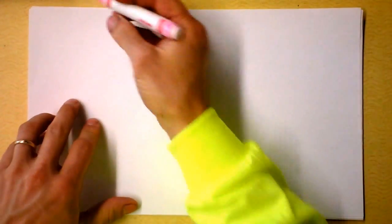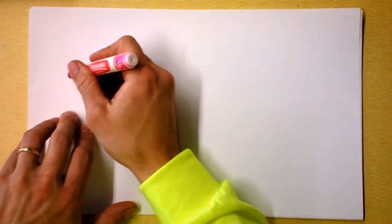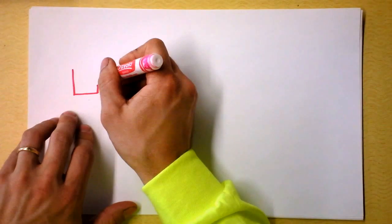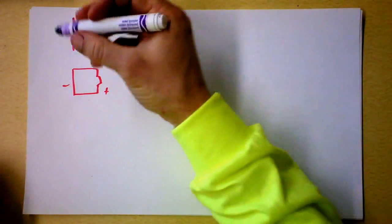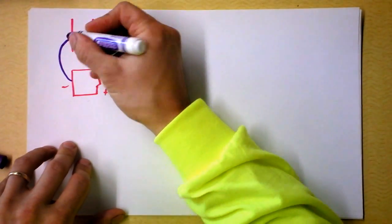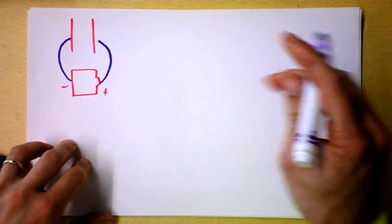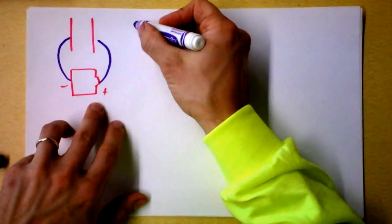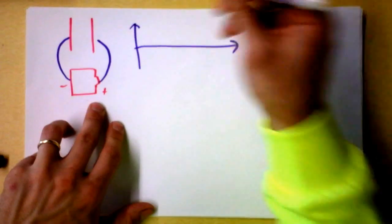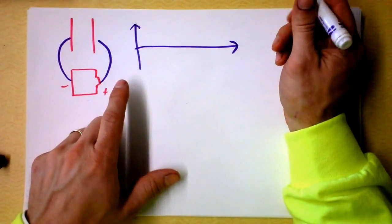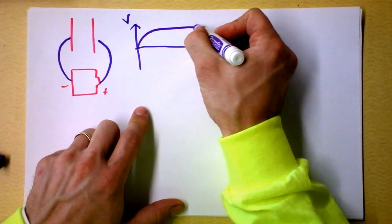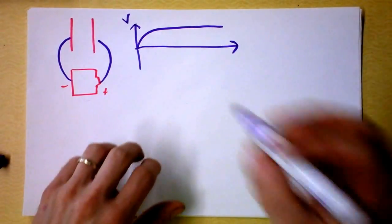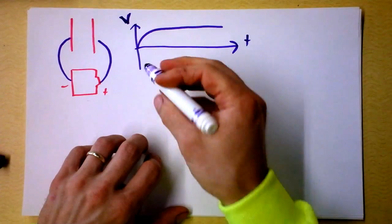If I hook up a capacitor to a battery — let's say I've got this D battery here, with the positive side and the negative side — and here I have a parallel plate capacitor, and I connect a wire between them, the voltage on the capacitor will gradually increase and approach some maximum level, probably the voltage of the battery, as a function of time.